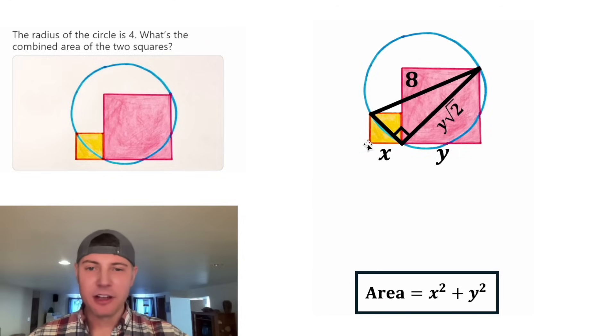And then we can do the same thing for the diagonal of this orange square. It would be equal to x radical two. And now we're ready for Pythagorean theorem.